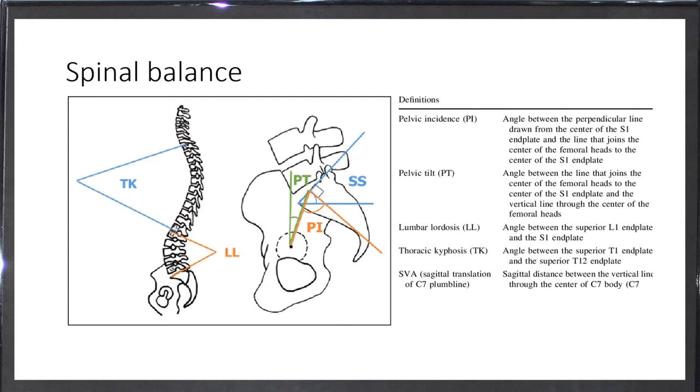The lateral exposure is very important as well in order to have these parameters: pelvic incidence, pelvic tilt, lumbar lordosis, and thoracic kyphosis. You've heard during this course about these parameters. These are very important parameters that have to be taken into consideration because you need a balanced spine at the end of your treatment, whether it is operative or non-operative.